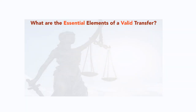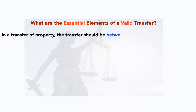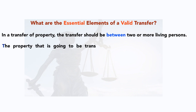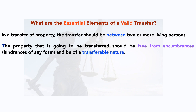Now, what are the essential elements of a valid transfer? First, the transfer should be between two or more living persons — there must be a seller and a buyer. Second, the property to be transferred should be free from incumbrance, meaning free from any hindrance or problem of any form. It must also be transferable in nature — there are certain types of property that cannot be transferred legally.